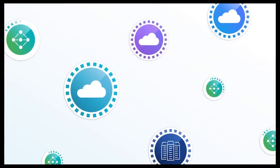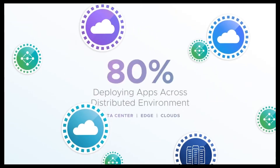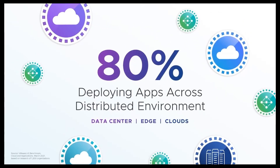Our customers talk about a 2+1 or a 2+2 strategy: two public clouds, their data center turned into a private cloud, and the edge operating as a cloud. It is this distributed picture that's becoming the norm for most of our customers.